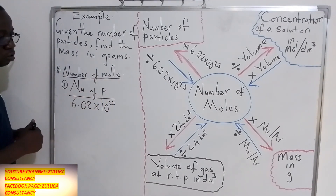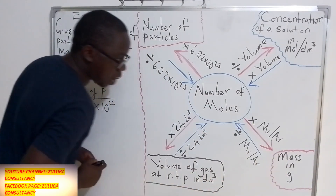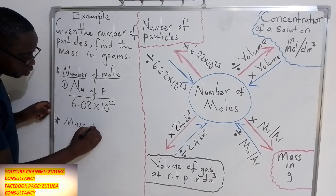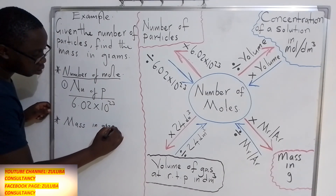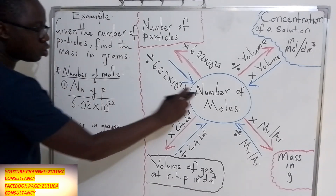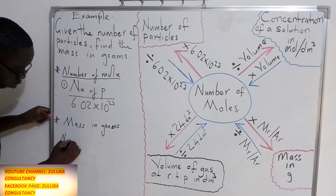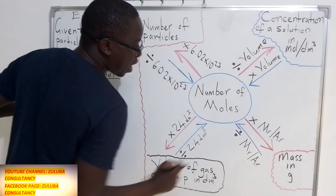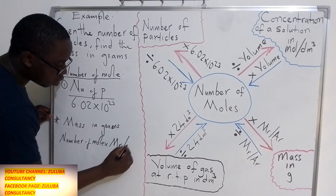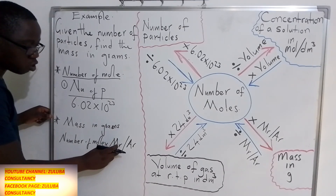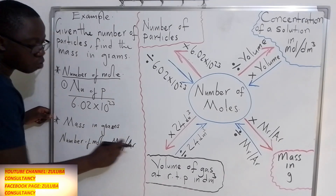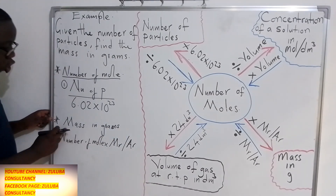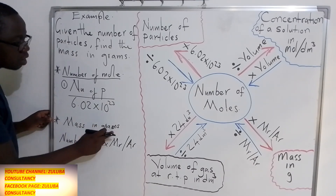After you have calculated the number of moles, you can now use it to calculate the mass. The number of moles should be multiplied by the relative molecular mass or the relative atomic mass. If you have been given a molecule, you will use the relative molecular mass; if you have been given an atom, you will use the relative atomic mass. Multiplying the number of moles by the relative molecular or atomic mass gives you the mass in grams.